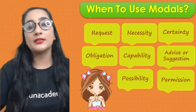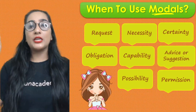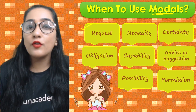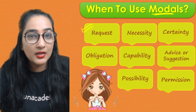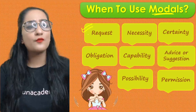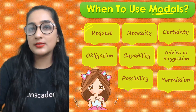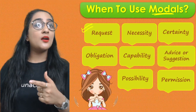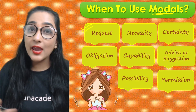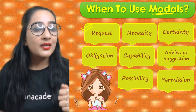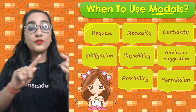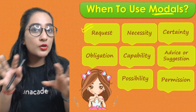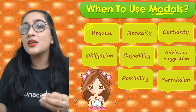Where do you use modals? There are many categories. First is request — 'Can I go outside?', 'Can I meet my friend?', or more politely, 'Could you please get me a glass of water?' or 'Would you please pass me that glass of water?' You can use three different modals — can, could, and would — for requests, but you have to decode the meaning correctly to know how polite or formal you need to be.